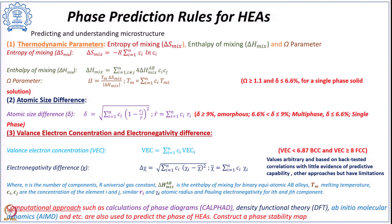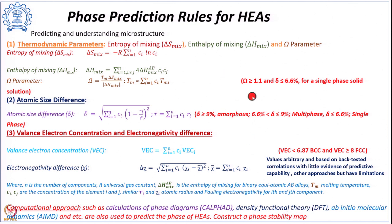A complete phase stability map is drawn considering a series of parameters like thermodynamic parameters — entropy of mixing, enthalpy of mixing, or the ratio of these times temperature — as well as atomic size difference, valence electron concentration, and electronegativity. A phase stability map is found using these parameters, and a range of values is defined such that when values lie above or below a certain range, a particular phase is stable.